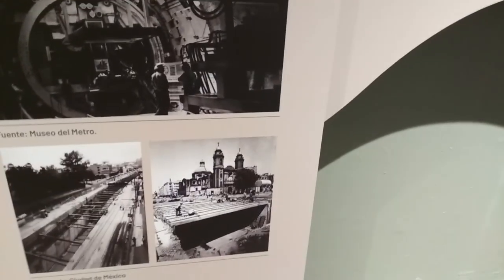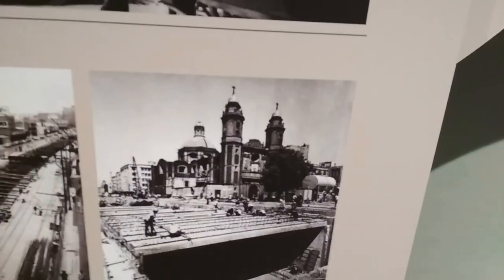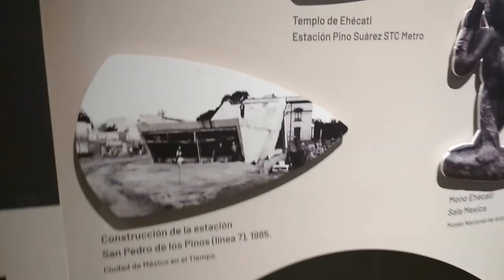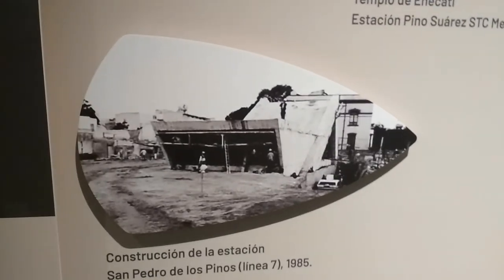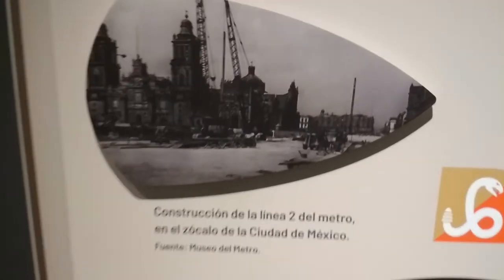Si les agarra un sismo en la línea naranja, no hay de qué preocuparse. Aquí vemos cómo construyeron el metro con ese escudo. Ese es San Hipólito. Aquí vemos la entrada a la estación San Pedro de los Pinos. Y aquí vemos cómo está en el Zócalo, en la línea 1 del metro.